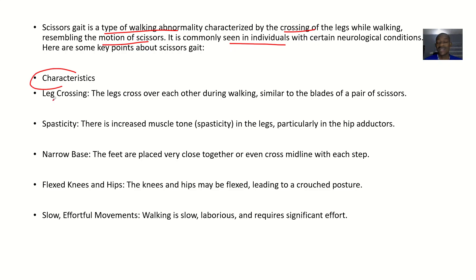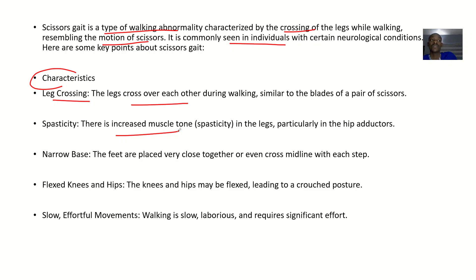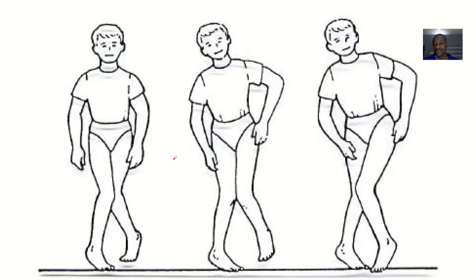The first characteristic is double leg crossing — the legs cross over each other during walking, similar to the blades of scissors crossing. That's why it's called scissors gate. The second characteristic is spasticity — there's an increase in muscle tone in the legs, particularly in the hip adductors.